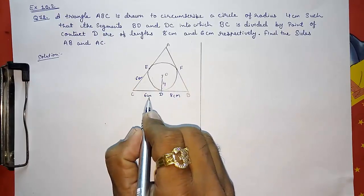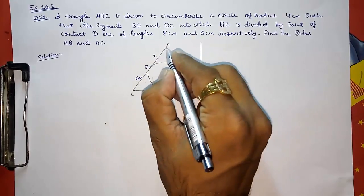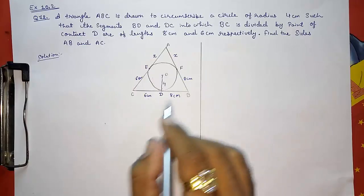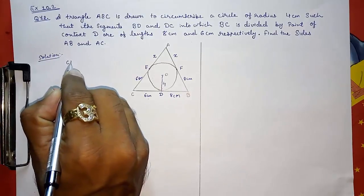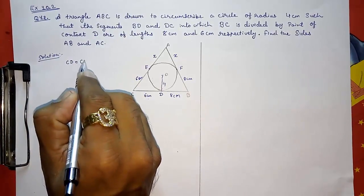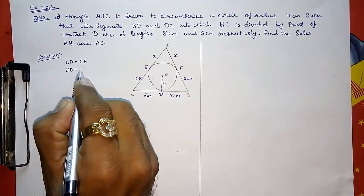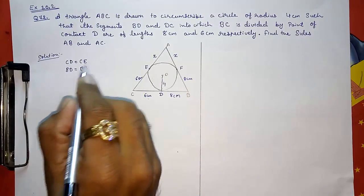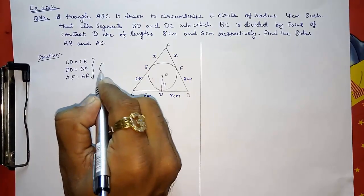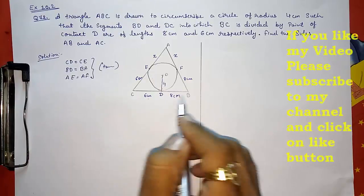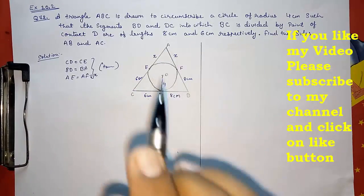Now this is 6 because this is 6. This is 8, so this is also 8. And suppose AE is X, so AF will also be X. Now we have to first make this, then you have to join. So first we are going to write: CD equals to CE, BD equals to BF, and AE equals to AF, while tangents from the exterior points are equidistant. So I've written this all. Now here you have to write equals to X also because we had supposed X.